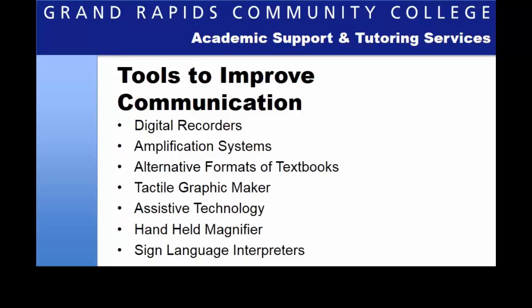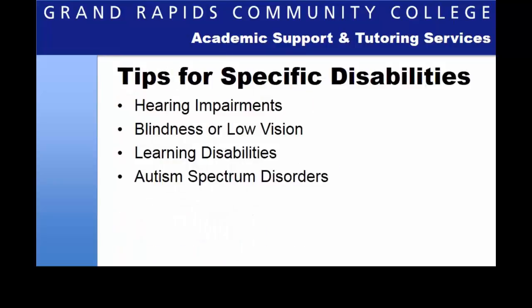Students with disabilities have resources, equipment, and technology at their disposal to help make tutoring more effective. These things include digital recorders, amplification systems for those who are hard of hearing, alternative formats of textbooks, a tactile graphic maker, and assistive technologies such as magnification software, screen reader software, spell check apps, and many more. The college can also provide handheld magnifiers and sign language interpreters. If you feel communication is an issue, talk to your supervisor to brainstorm possible solutions. The next few slides will introduce hints for working with students affected by hearing and vision impairments, learning disabilities, as well as autism spectrum disorder.